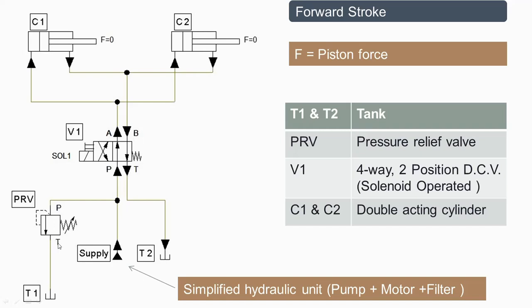P and T for the time being are not connected. T1 and T2 are the tanks. This is the simplified hydraulic unit symbol consisting of pump, motor, filter, etc. Since the valve is in the right envelope mode, the fluid from the pump will enter at port P.